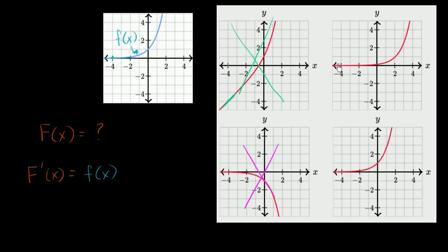Over here, when x is equal to negative four, the slope of the tangent line does look pretty close to zero, so I won't rule that one out. And over here, the slope of the tangent line when x is equal to negative four also looks pretty close to zero. So these are still both in the running.